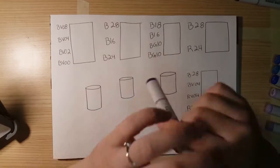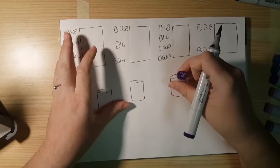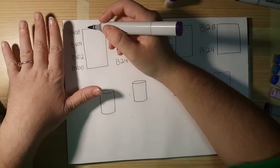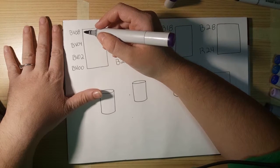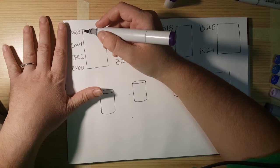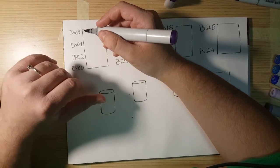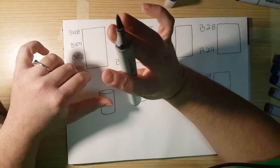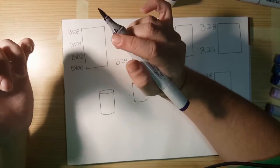Now when I shade with Copic markers, I found the easiest thing to do is to start with the darkest color, because if you start with the lightest color, you'll have to go back over with the lighter color again to blend it out. Whereas if you start with the darker color, I feel like I save ink though.